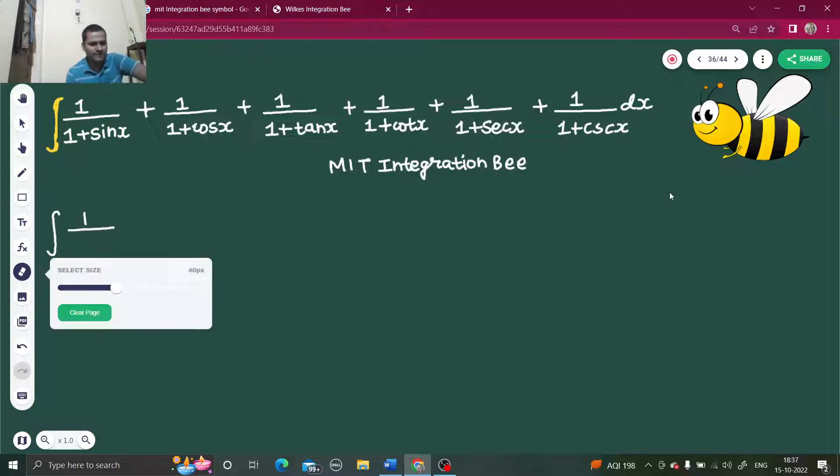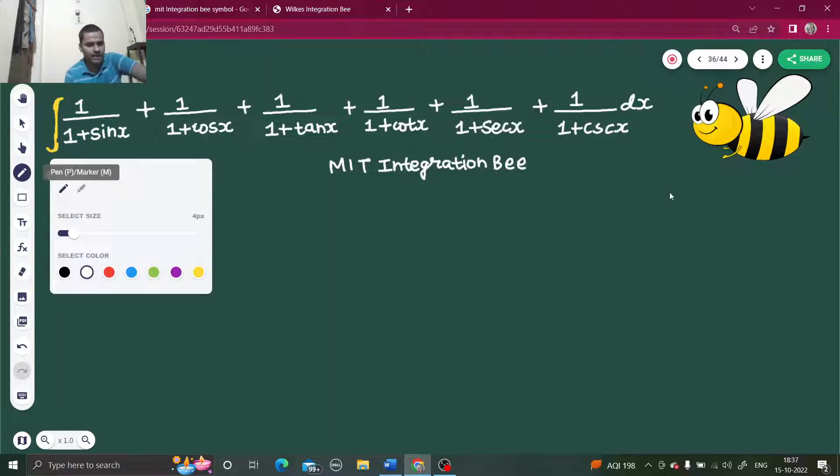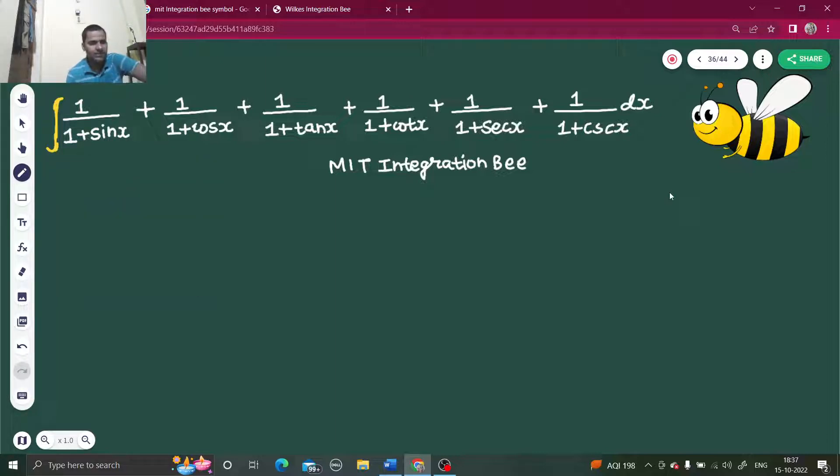Let's simplify this on that basis. First of all, let's do one thing: first simplify, then we will integrate. I take the integrand, that means whatever is inside the integration, and try to simplify that. I have 1 upon 1 plus sin x, 1 upon 1 plus cos x.